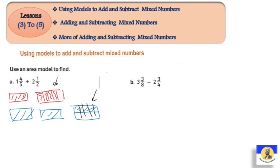So the first mixed number, instead of one and four over five, it becomes one and eight over ten. And the second mixed number, instead of two and a half, it becomes two and five over ten - one, two, three, four, five over ten. Good.